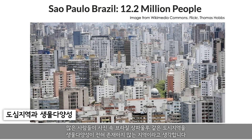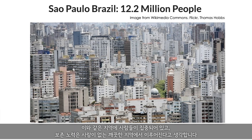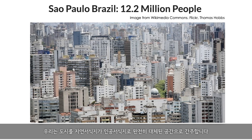Many people think of urban areas — such as what we see in this image of São Paulo, Brazil — as biodiversity dead zones. Areas that we concentrate people into while working to conserve more pristine areas without people in them. We think of cities as places in which natural habitats are completely replaced with artificial ones.